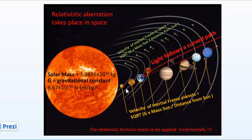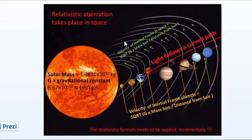The velocity of the planets depends on their distance from the Sun and is dependent on the following formula: square root of g — the gravitational constant — times the mass of the Sun, divided by the distance from the Sun. Now let's assume that space itself also rotates around the Sun with the exact same speed as the planets and the exact same formula. In that case, the formula for aberration can be applied incrementally: as light moves through space with different orbital velocities, light is forced to follow a curved path.